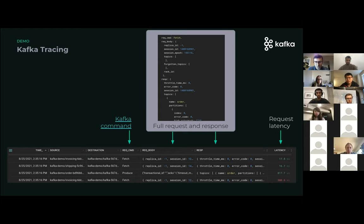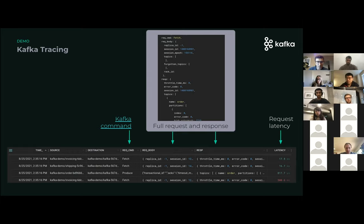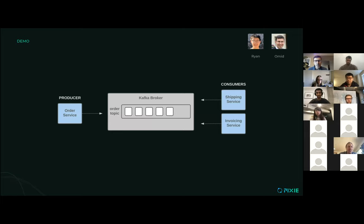On the right we have the request latency — this is the latency at the protocol level, so individual messages from the client to the server. If there are any issues with that, you can monitor the latencies as well.